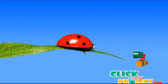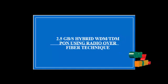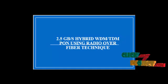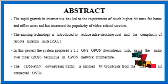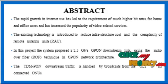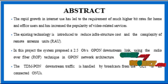Welcome to ClickMyProject.com. Our product title is '2.5 Gbps Hybrid WDM-TDM-PON Using Radio Over Fiber Technique.' We are going to discuss the abstract. A Hybrid Gigabit Passive Optical Network is a hybrid passive optical network where Wavelength Division Multiplexing and Time Division Multiplexing are integrated into a single passive optical network, reducing cost and increasing the data rate.